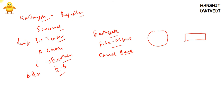The second reason Kalibangan was not a planned city was that there was no drainage system. In other Indus Valley civilization sites, sewers went out from the sides of houses and waste water flowed to a common collection point. But in Kalibangan there was no such drainage system.